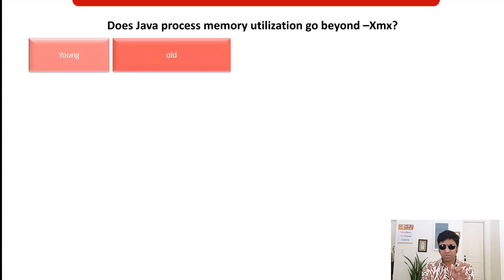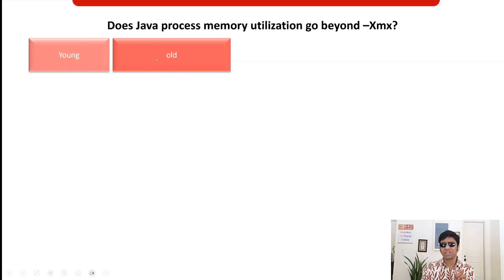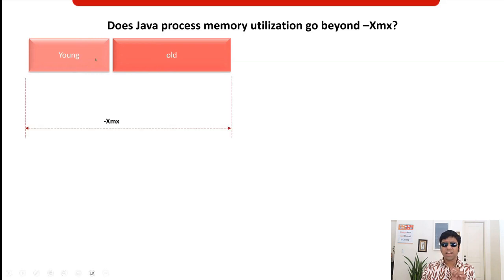To answer that question we need to understand the JVM internal memory regions. Initially the JVM has two regions: one is called the young generation and the other is called the old generation. All newly created objects go into the young generation, and if they survive for a longer period they are promoted to the old generation. When you set xmx, you are actually only setting the size of the young and old generation.